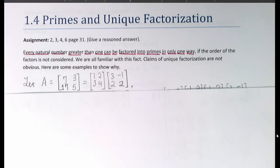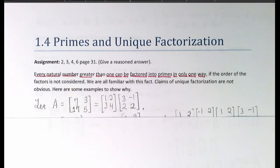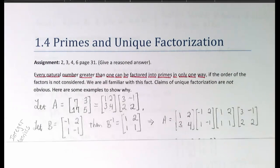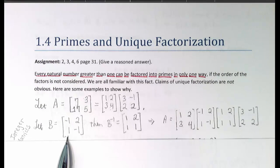Suppose we were thinking about integer matrices. For instance, we could take the matrix with first row 7, 3 and second row 17, 5. It can be factored as we've pictured here. But is that the only way? The answer is no. If I select any matrix B that is invertible, in this case first row -1, 2 and second row 1, -1,